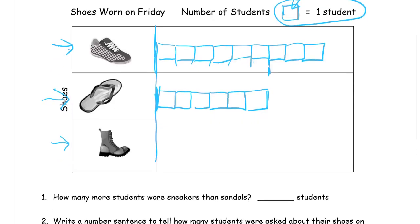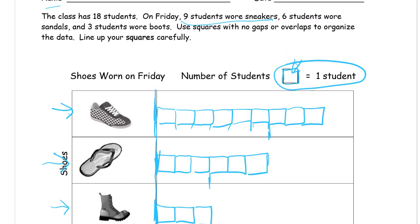Three students wore boots, so think about the first three squares — it should go about that far. We're going to start right here: one, two, three. When you're done, what matters most is that your nine sneakers bar looks longer than the six sandals and three boots bars. The six sandals should look in between, and the boots should look like the least.